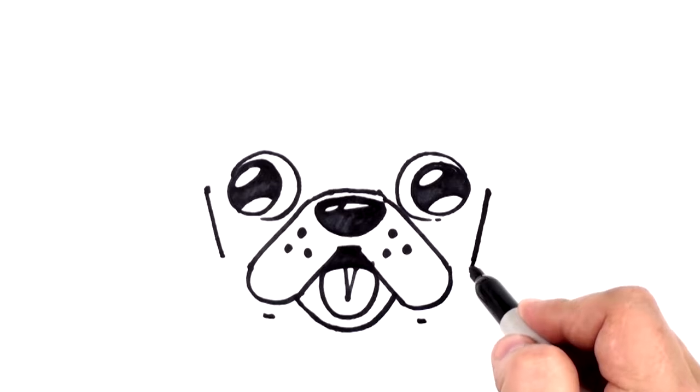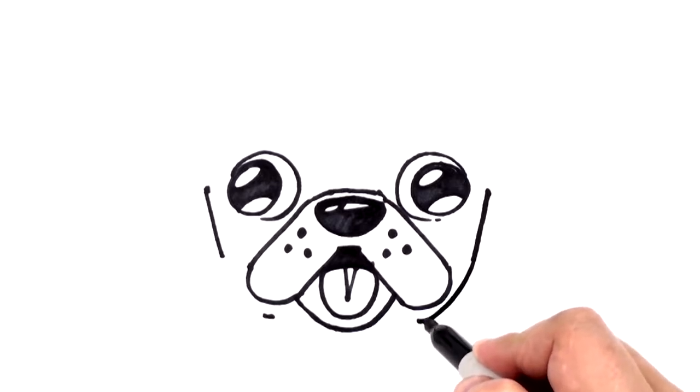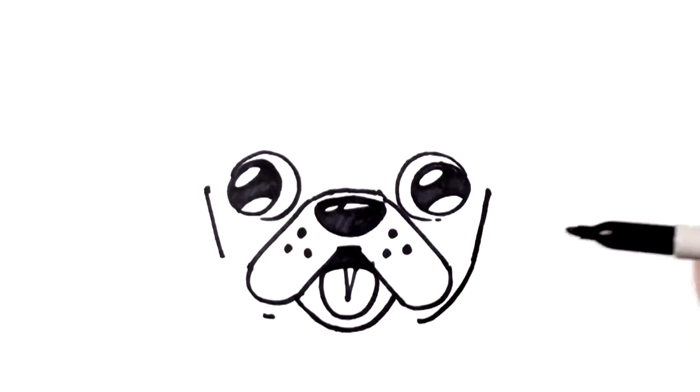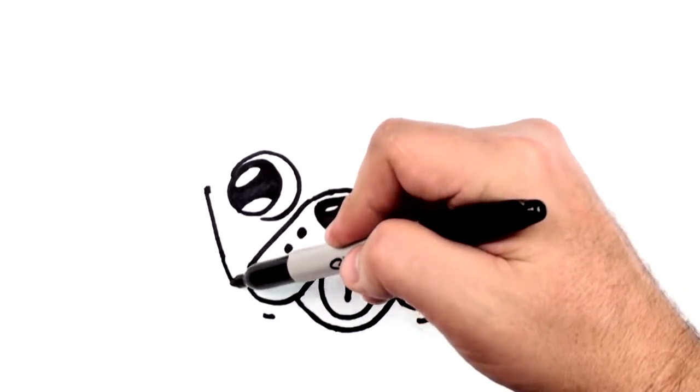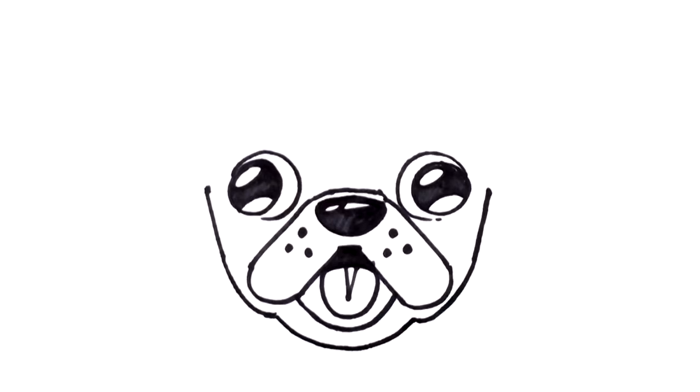And then we're going to curve. Like that. See, so first straight, then curve. Then we're going to curve around there. And the reason we stopped here is below here. We want to actually do another curve below the mouth.